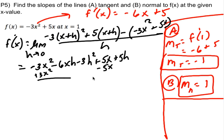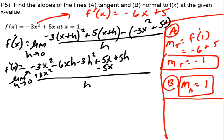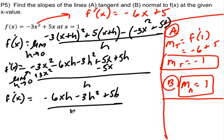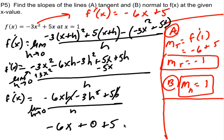For P5, f(x) = -3x² + 5x: f prime of x equals -6x plus 5. The tangent slope at x = 1 is f prime of 1 = -6 plus 5 = -1. The normal slope is the opposite reciprocal of -1, which is +1. Working through the limit definition: expanding -3 times x plus h squared plus 5 times x plus h, minus the original function, then canceling terms without h and factoring out h, confirms f prime equals -6x plus 5.